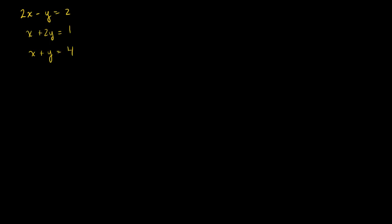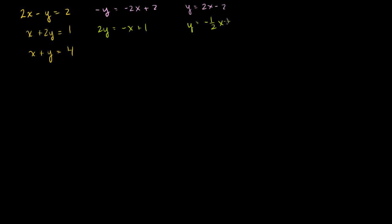Let's first graph these to have a visual representation. I like writing lines in y equals mx plus b form. The first line becomes y is equal to 2x minus 2. The second line, in green, is y is equal to minus 1 half x plus 1 half — I just divided both sides by 2. And the last line is y is equal to minus x plus 4.